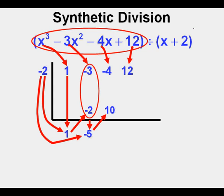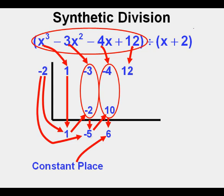Then we take negative 4 and 10 and add them together, and place the sum of that addition, 6, below the frame here in the constant or numbers place.